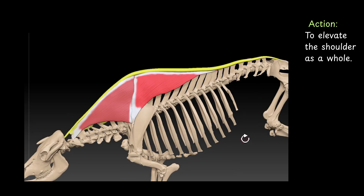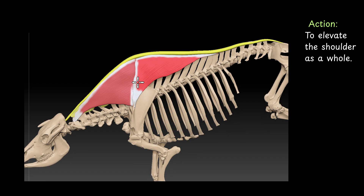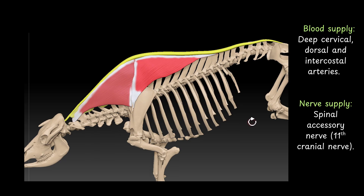What is the action of the muscle? To elevate the shoulder as a whole. So the muscle elevates the shoulder as a whole. Blood supply: the muscle is supplied with deep cervical arteries, dorsal and intercostal arteries. Nerve supply: the muscle is supplied with spinal accessory nerve or 11th cranial nerve. In the myology series we mainly focus on the origin, insertion, and action of the muscle. Regarding the details of blood supply and nerve supply, we will discuss those in the angiology and neurology chapters.